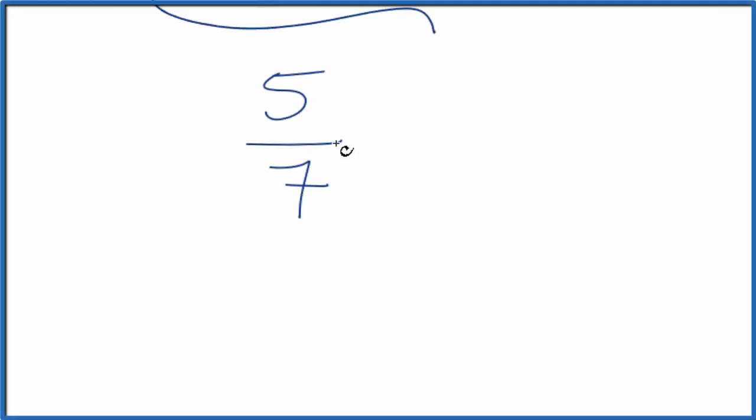Let's write the reciprocal for five-sevenths. So we want to know what the reciprocal is for five over seven. And to do that, we just take the denominator, we move it up top, and the numerator, we move it down here.